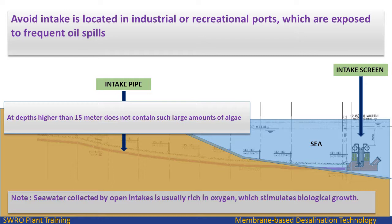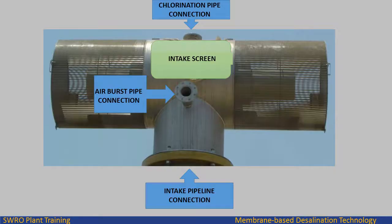Seawater collected by open intakes is usually rich in oxygen, which stimulates biological growth. Three pipelines are connected to each intake screen: one for the seawater pipeline, one for chlorination, and one for the air burst system.